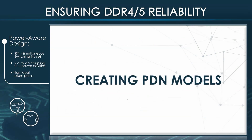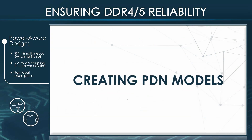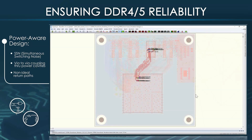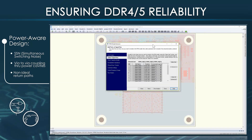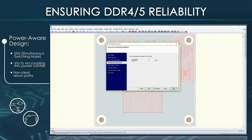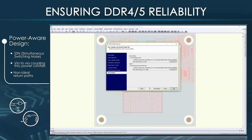To create the PDN models in HyperLynx SI-PI, select some signal nets as shown here and choose Analyze > 3DEM > Manage Power-Aware SI Models. With the signal via-to-via coupling option enabled, click the Create button. This PDN model extractor wizard lets you set up some of the extraction parameters and simply click Run Analysis to create the model.